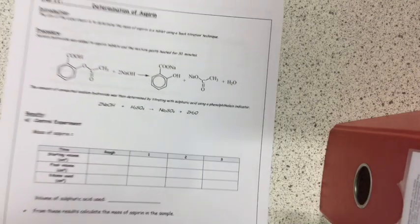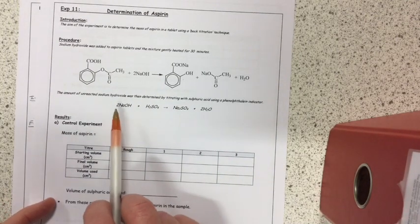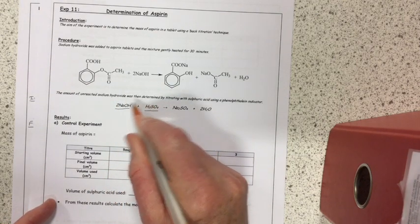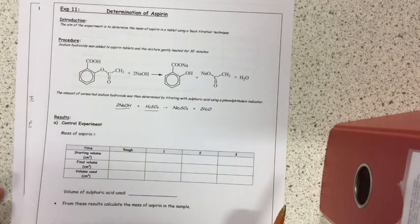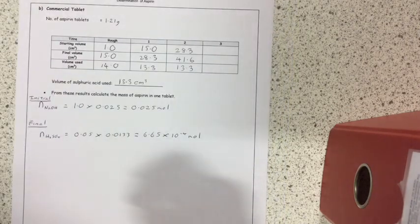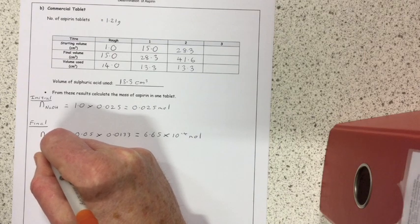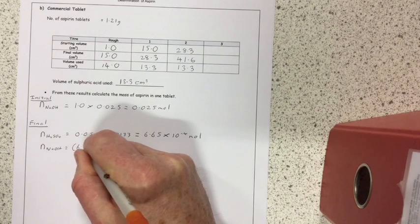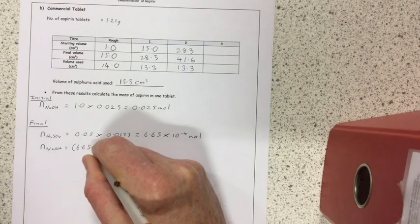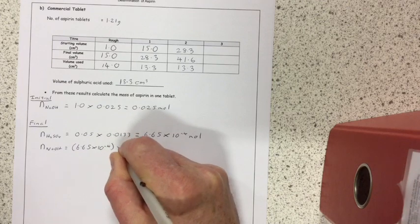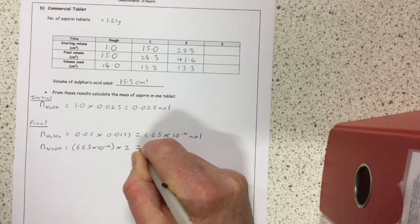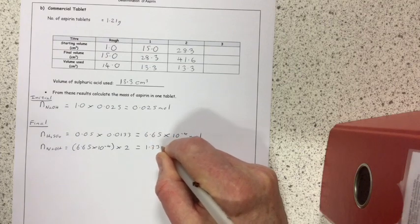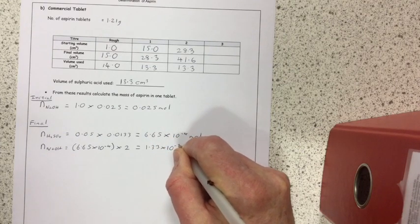Now, if we look at the balanced equation for the reaction between sodium hydroxide and sulfuric acid, we see that one mole of sulfuric acid reacts with two moles of sodium hydroxide. So, the number of moles of sodium hydroxide will be the number of moles of sulfuric acid, 6.65 times 10 to minus 4 times 2, which comes out at 1.33 times 10 to negative 3 moles.